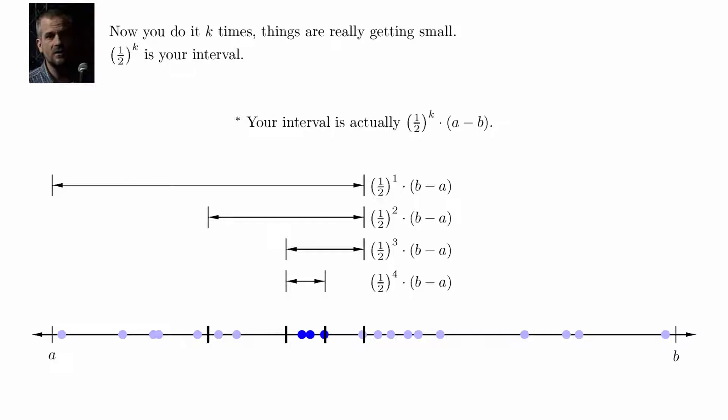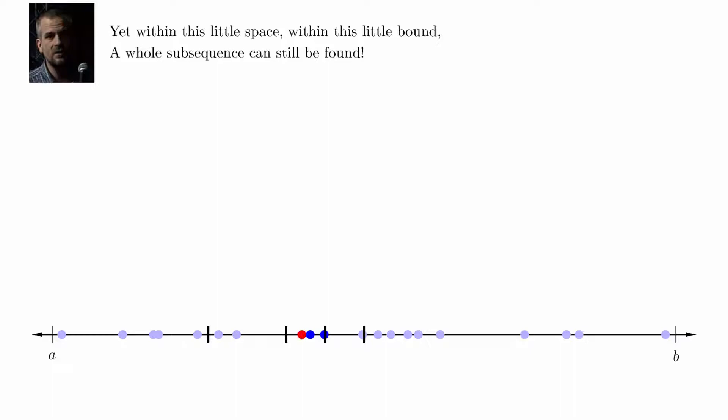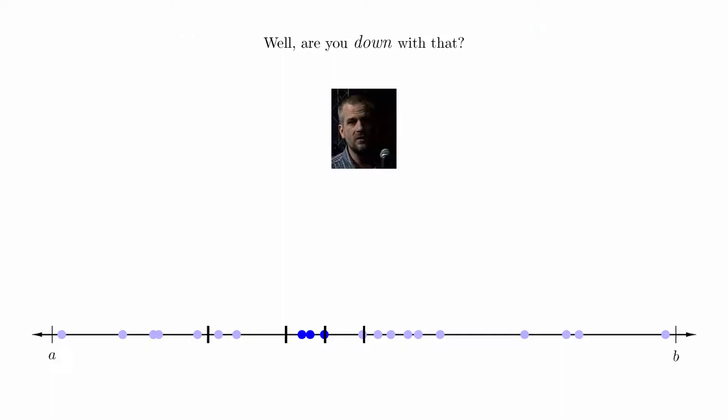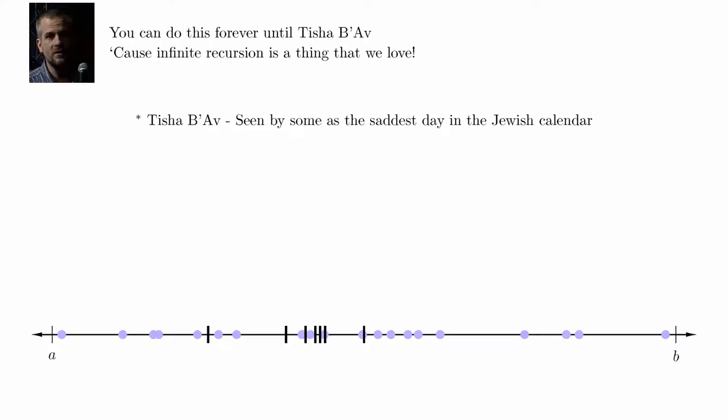Now you do it K times. Things are really getting small. One half to the K is your interval. Yet within this little space, within this little bound, a whole subsequence can still be found. Yo, are you down with that? Yes, we're down with that. We're down with that. Well, are you down with that? We're down with that.